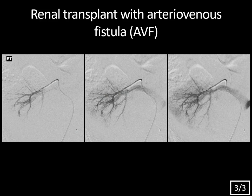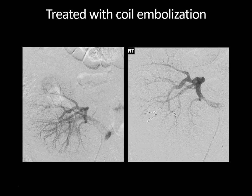AVFs tend to resolve spontaneously, but may be treated if symptomatic, if they increase in size, or become extra-renal. Typical therapy is selective renal angiography with embolization. The pre-treatment image shows arterial flow with an early draining vein, and post-embolization we only see arterial flow — that immediate draining vein is gone.